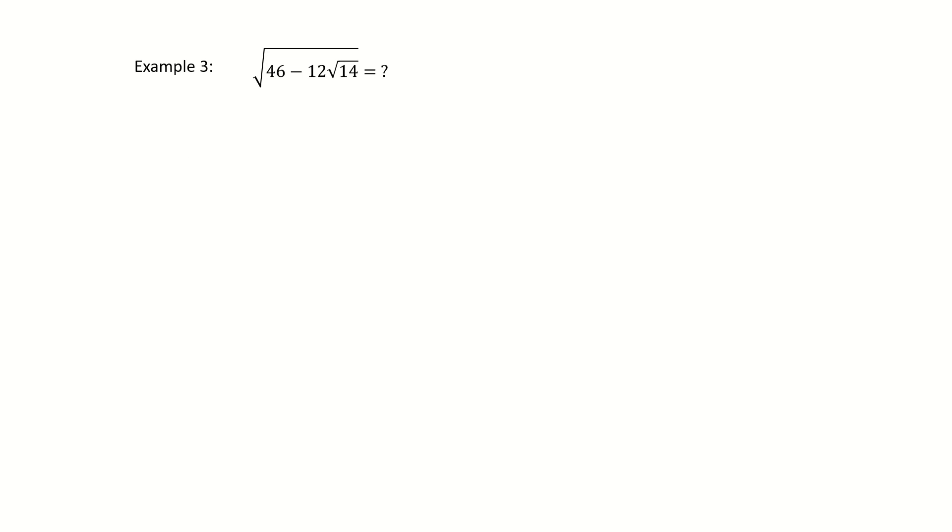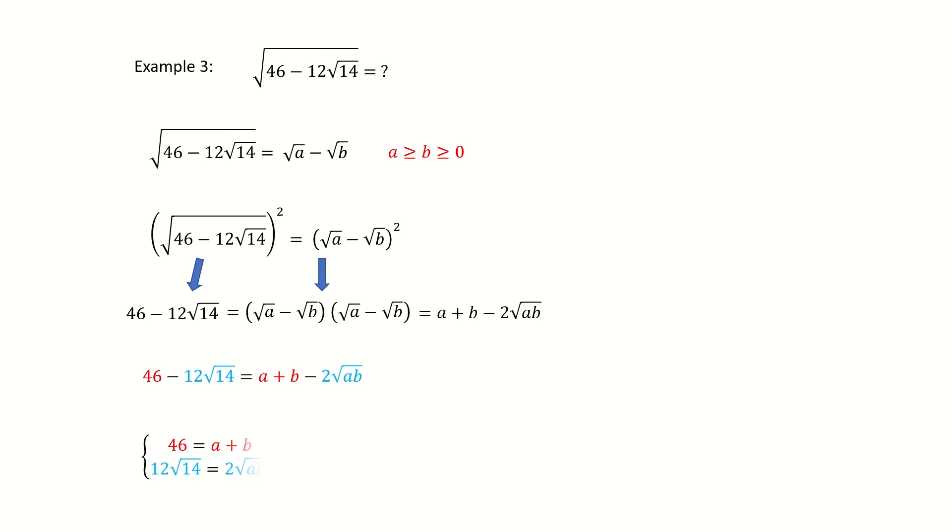We look at example 3, which is the expression in the very beginning slide. Again, we set it to square root a minus square root b. And we apply the same condition here. So we square it on both sides. And then we expand the right-hand side. But note here, we have to put the factor 6 inside the square root.